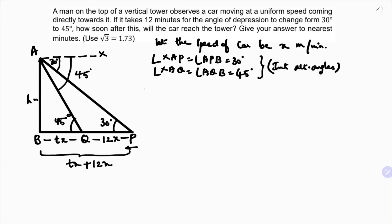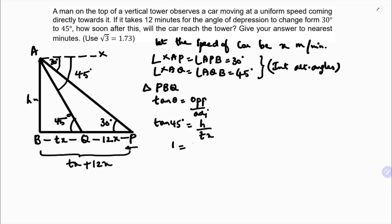If I simplify, I will take triangle ABQ and apply the tan theta ratio — opposite by adjacent. So tan 45 equals h by t-x. Tan 45 is 1, so 1 equals h by t-x, which gives h equals t-x. This is equation 1.